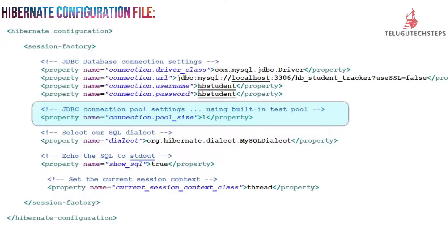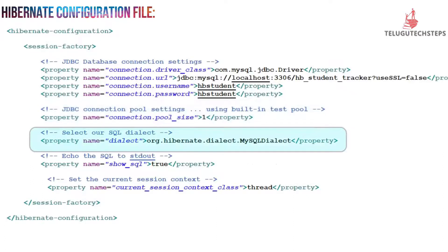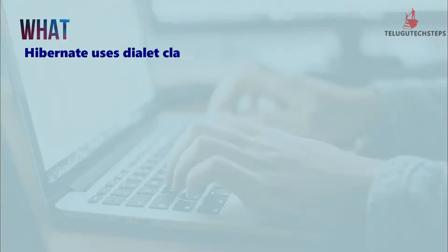That is not our concentration here. We are going to tag the dialect — the property name is org.hibernate.dialect.MySQL.dialect. We are going to talk about what dialect means in Hibernate.